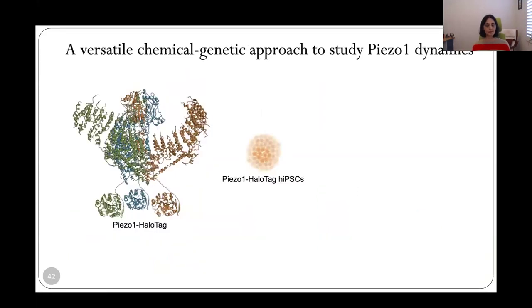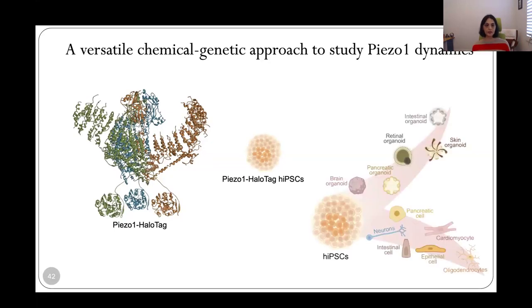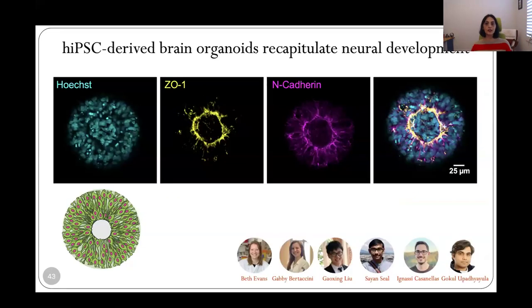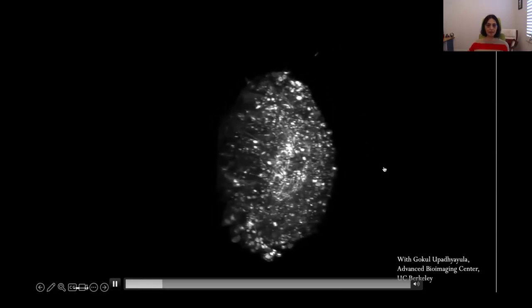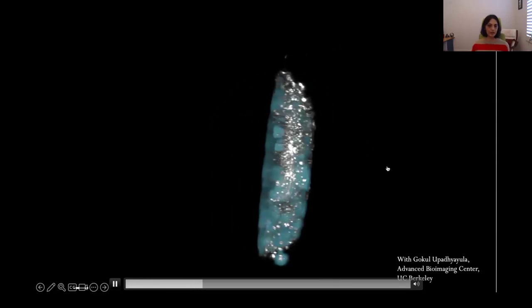The advantage to using the iPSCs as our system to do genetic engineering is that we can differentiate them into any kind of cell type or tissue organoid. And so this allows us to also look at Piezo1 dynamics at the tissue scale of human Piezo1. And so we've taken the first steps with brain organoids where we have differentiated our iPSC line into a two-and-a-half dimensional tissue model of the neural tube called micropatterned neural rosette. This has a central lumen surrounded by stem cells around it. And in collaboration with Gopal Iyer and Eric Betzig's lab, we have imaged these with the lattice light sheet microscope.